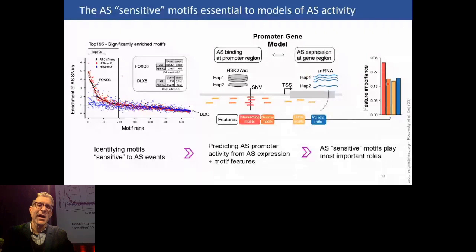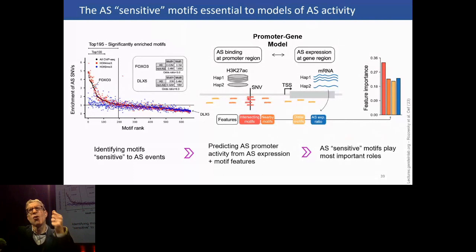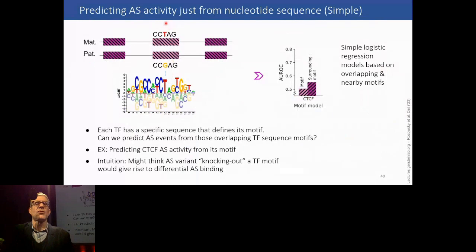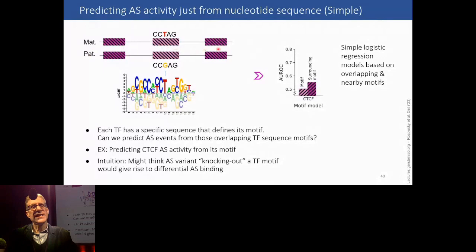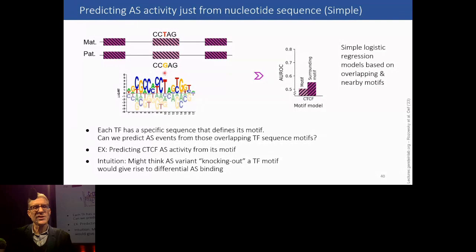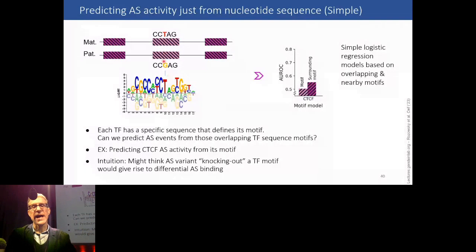So if you have an allele-specific gene and you're trying to predict if the promoter is allele-specific, the most important feature is: do you have a sensitive motif with an SNV in the promoter? We started to think about what gives rise to allele-specific activity. We took CTCF, for which we had a lot of data, and imagined: if you have CTCF motifs on the genome and an allelic variant hits the conserved part of the CTCF motif, it makes sense you might get allele-specific binding. We made a simple model for that — and the model did not work at all, with an AUC of 0.5.